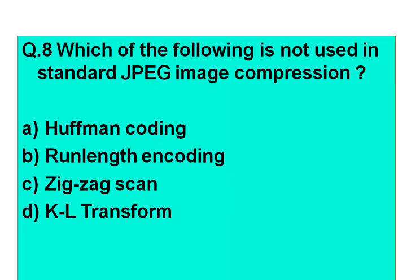The next question: Which of the following is not used in standard JPEG image compression? Option A: Huffman coding. Option B: Run-length encoding. Option C: ZigZag scan. Option D: KL transform. This question I leave to you — comment the answer. Meet you in the next lecture. Till then, take care. Bye-bye.